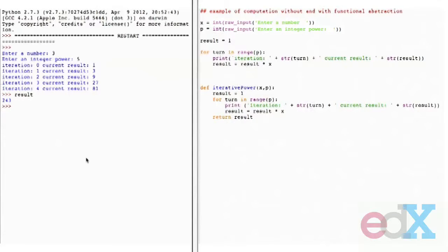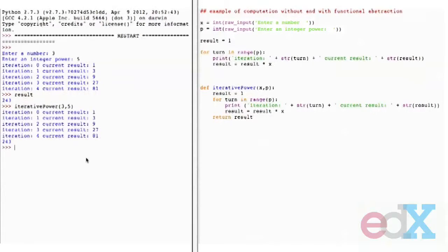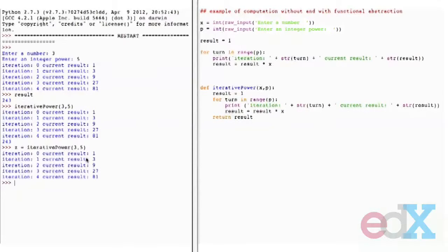Let's try to see if it works. If I say iterative_power of 3 and 5, it runs through exactly the same stages and prints out the value. If I were to bind this, say z equals iterative_power of 3 and 5, it runs through the computation, and if I ask for the value of z, there it is, 243.